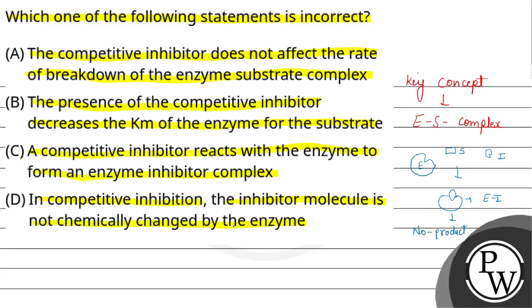इसके opposite, इसका reversible nature देखते हैं। जब substrate की concentration high होती है, तो inhibitor जो है वह work नहीं करता।